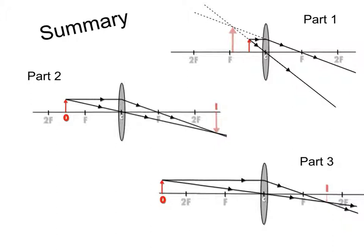And those are the three main diagrams that you can get for a converging lens. There are other special cases but these are the most important ones. Thanks for watching.